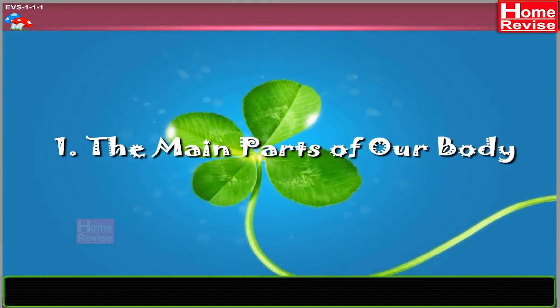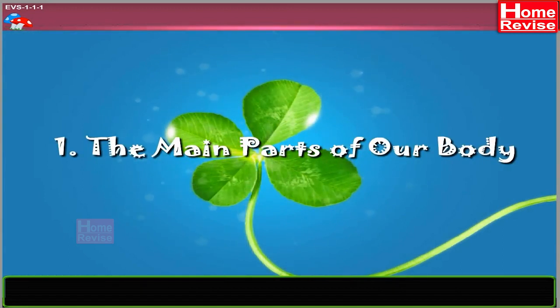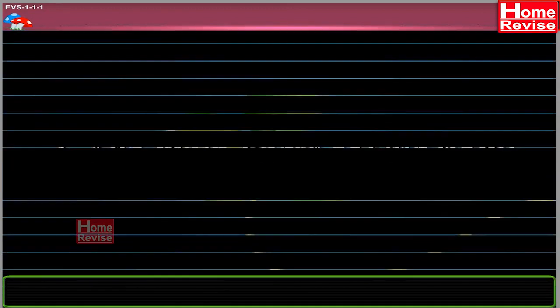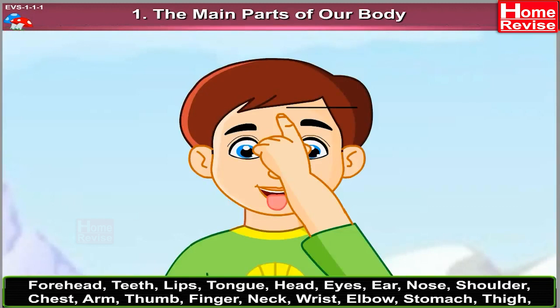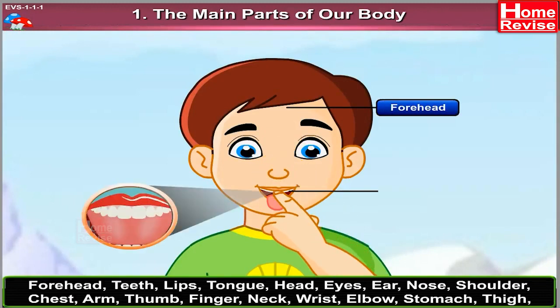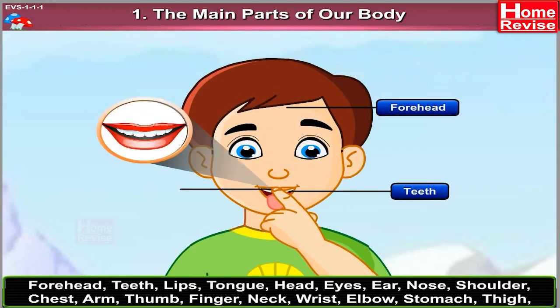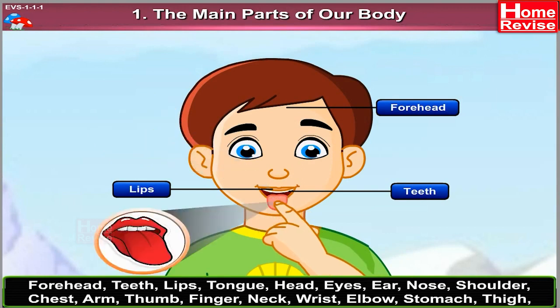Chapter 1: The Main Parts of Our Body. Forehead, Teeth, Lips, Tongue.